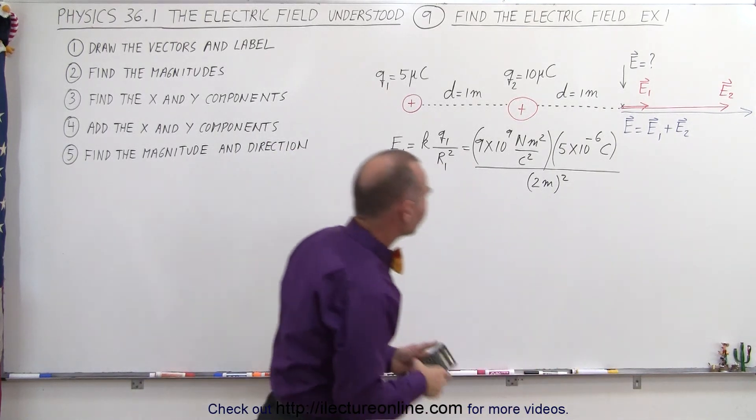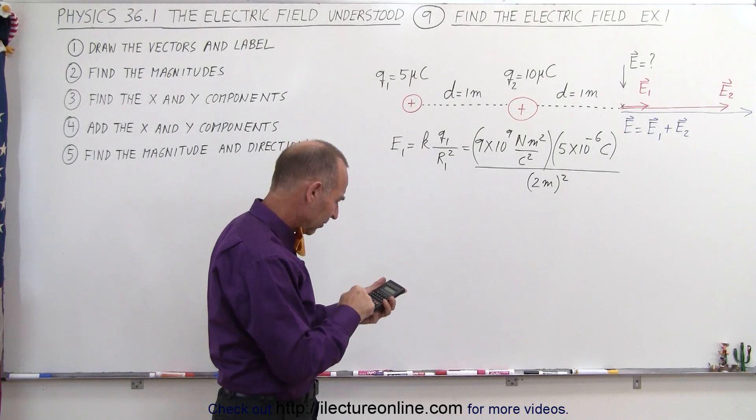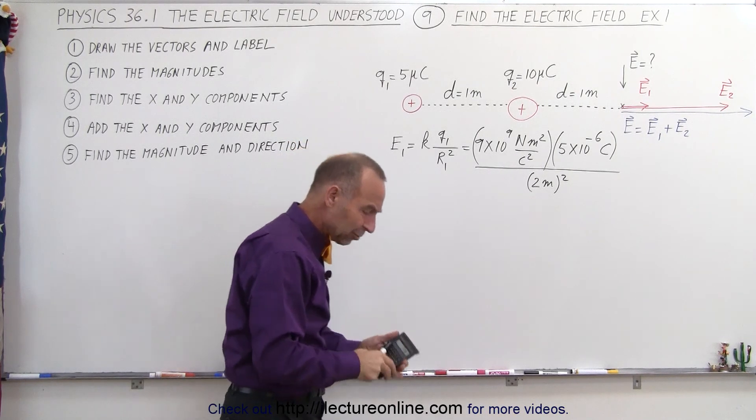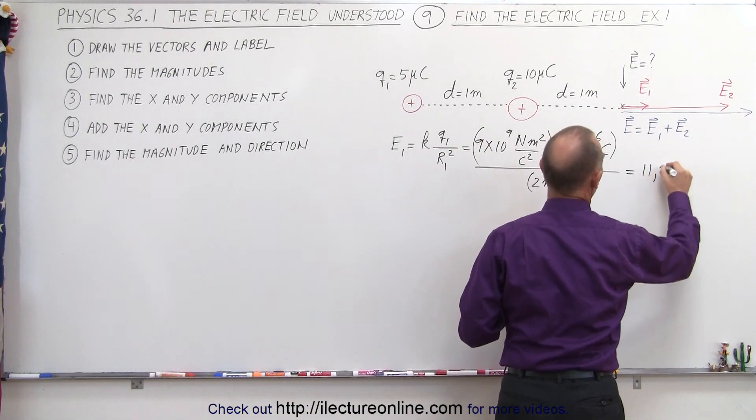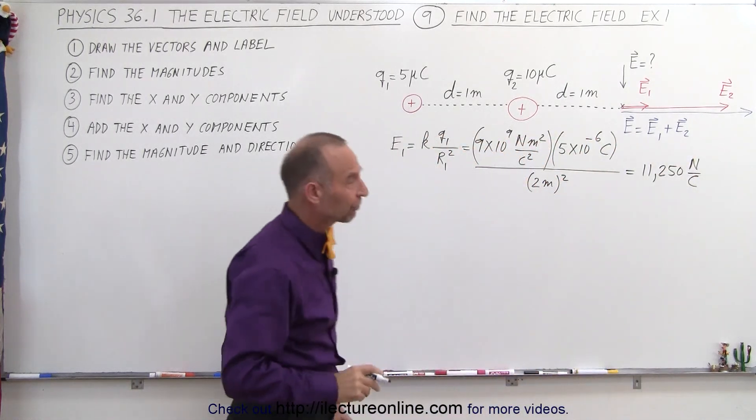Now we need a calculator for that. So we have 9 e to the 9th times 5 e to the minus 6 divided by 4, and we get 11,250 newtons per coulomb, which are the units of the electric field.